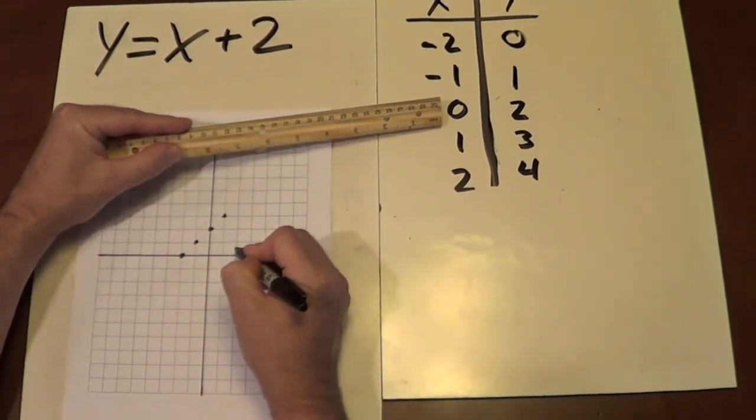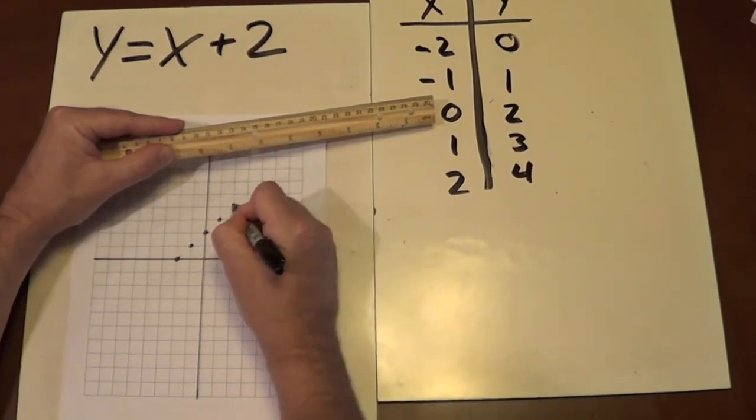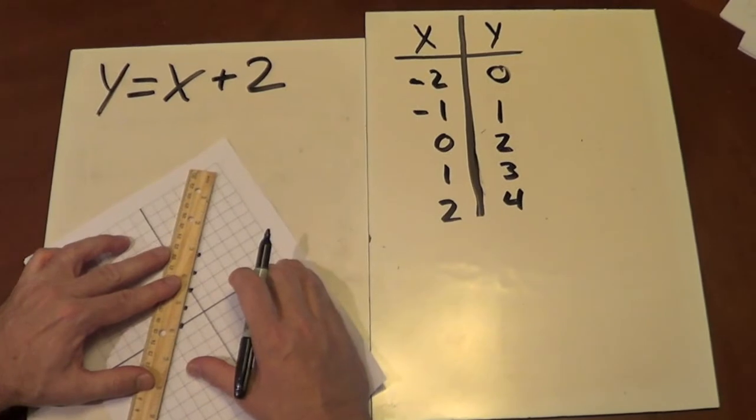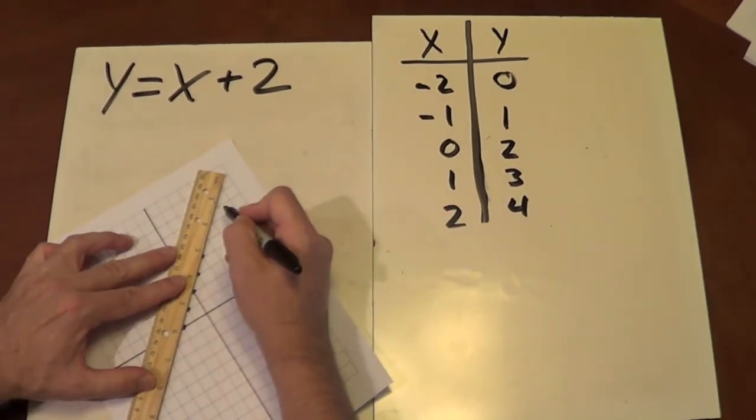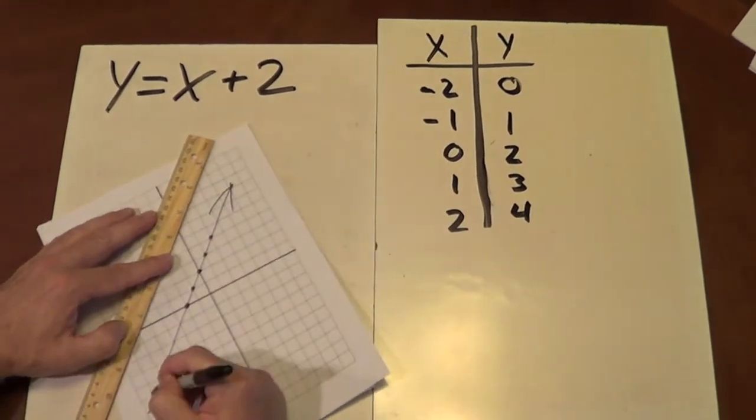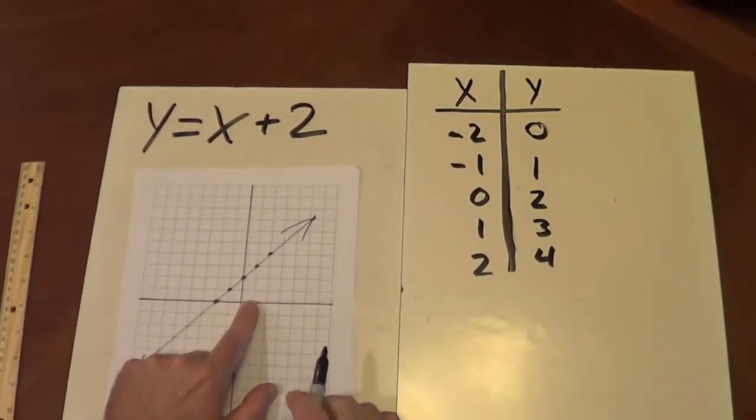And finally, x is 2. 1, 2, y is 1, 2, 3, 4. And we'll draw our line. And there's our graph.